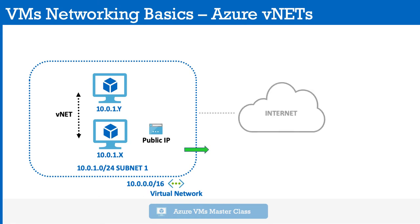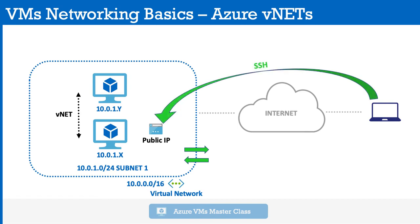This way we can have outbound communication — traffic leaving the Azure virtual network — and also traffic arriving at the VM from the internet. From our own PC or laptop, we will initiate an SSH connection to configure the virtual machine. We will connect through SSH, or Secure Shell, because it is a Linux machine. If it were a Windows machine, we would use RDP, Remote Desktop Protocol.